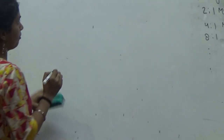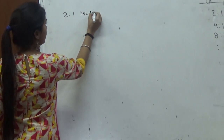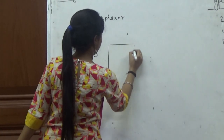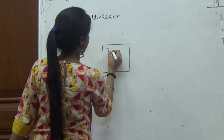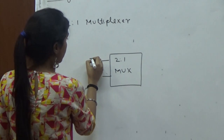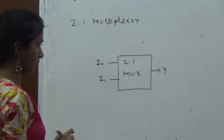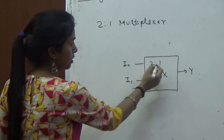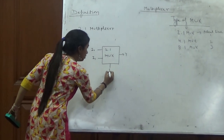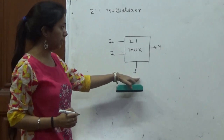I will start with the 2-to-1 multiplexer. As the name suggests, it has two inputs — let's write I0 and I1. In all cases, there is only one output. For the 2-to-1 multiplexer, the select line will be 1, because one select line is enough to control the operation of this multiplexer. So we will have 2 inputs, 1 select line, and 1 output.